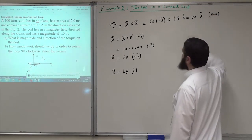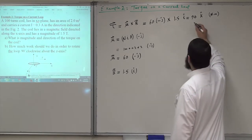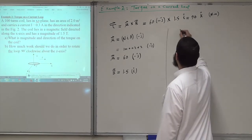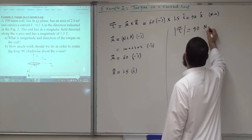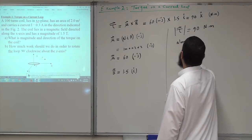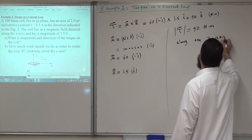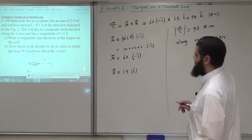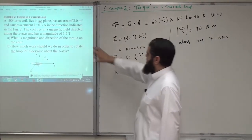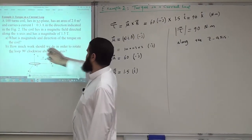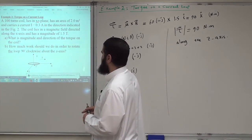The magnitude of the torque is 90 Newton-meters and its direction is along the positive z-axis. So the torque has magnitude 90 Newton-meters directed along the positive z-axis. This is the answer to part a.